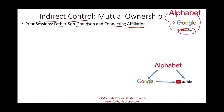We also looked at a triangular format where Alphabet controls Google — let's assume Google owns 30% of YouTube. In that case, Alphabet has no relationship with YouTube because Google does not control YouTube. But if Alphabet separately purchased 25% in YouTube, then Alphabet controls YouTube indirectly.